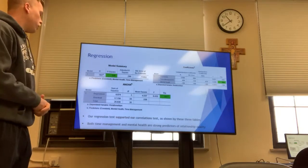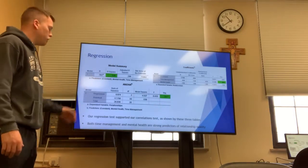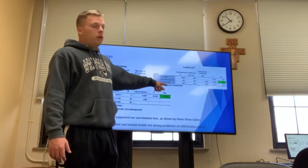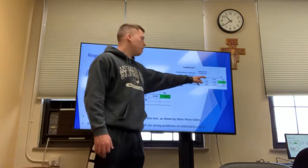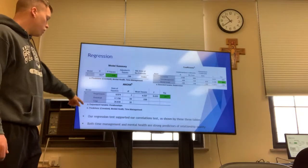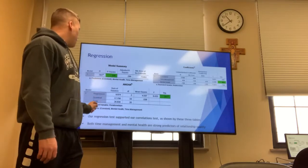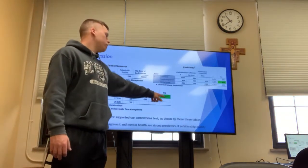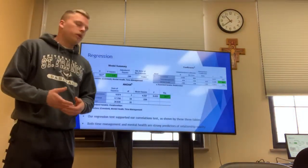Our regression test supported our correlations test, as you can see in these three tables. This table shows that with relationship quality as the dependent variable, time management is a significant factor — the better one's time management, the more healthy their relationships will be. This table shows that with both mental health and time management as predictors, the better their mental health and time management, the more healthy their relationships, as indicated by the significant figures. Both time management and mental health are strong predictors of relationship quality.